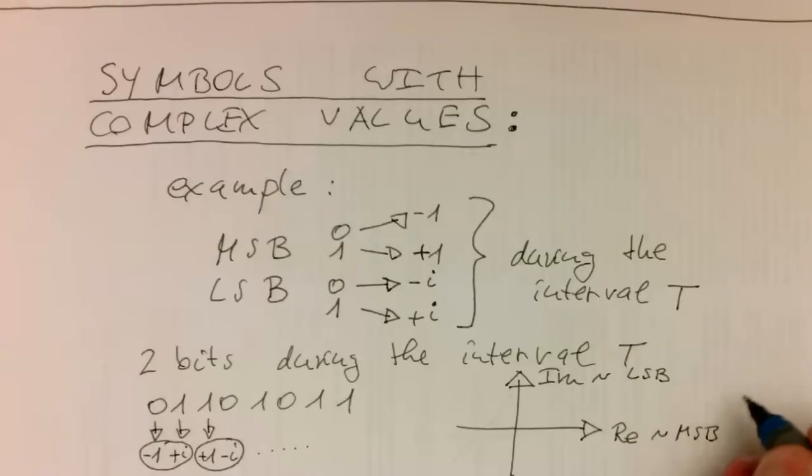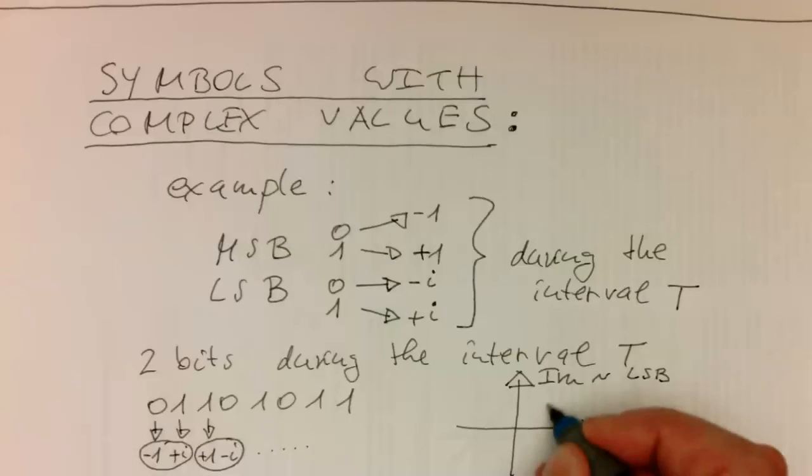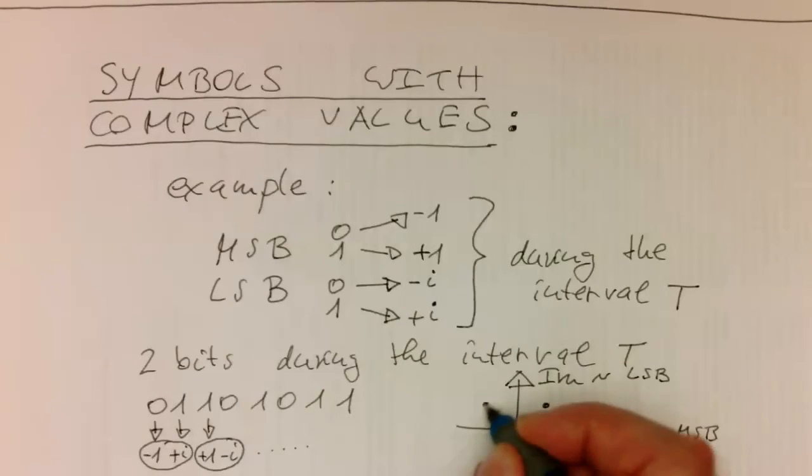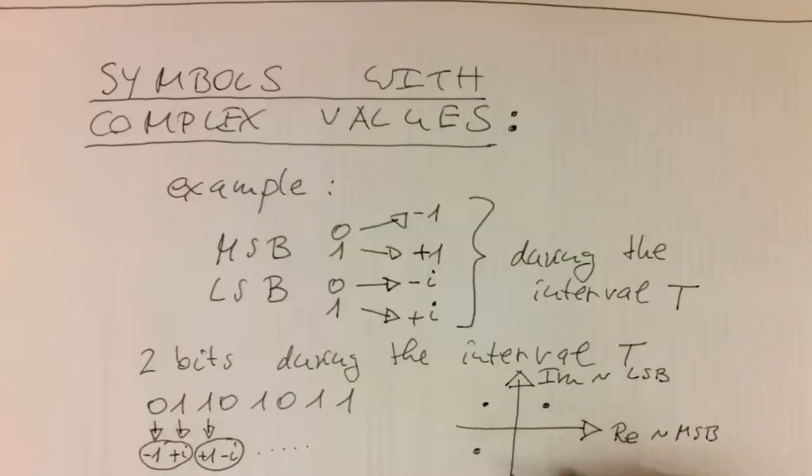Then we can draw these different possibilities in here. This is called the constellation diagram, and this will definitely show up many times in this lecture.